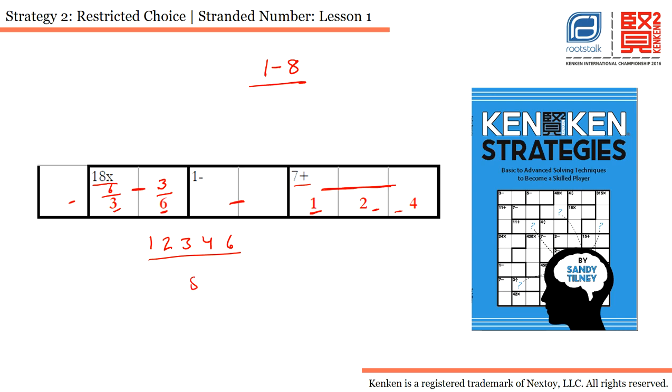Now if you observe this, it says 1 minus - that means I need to use two numbers and the answer has to be 1. Out of these three numbers, the only possible combination is 7 and 8. I cannot use 5 because if I use 5 and 7 I will get 2.